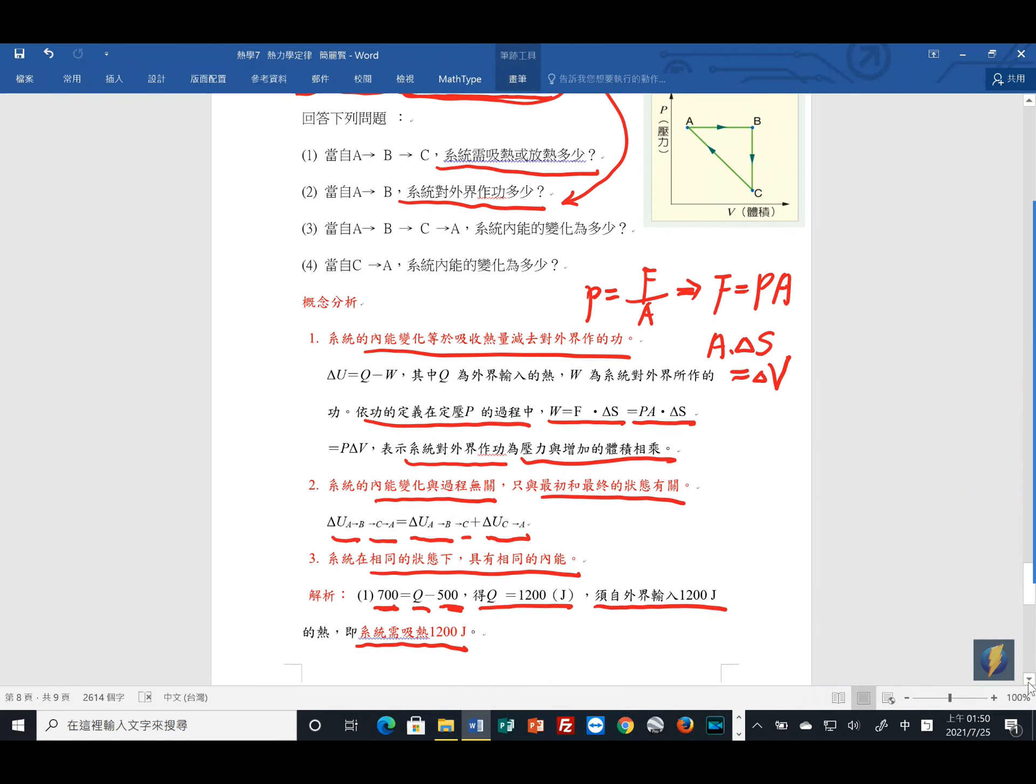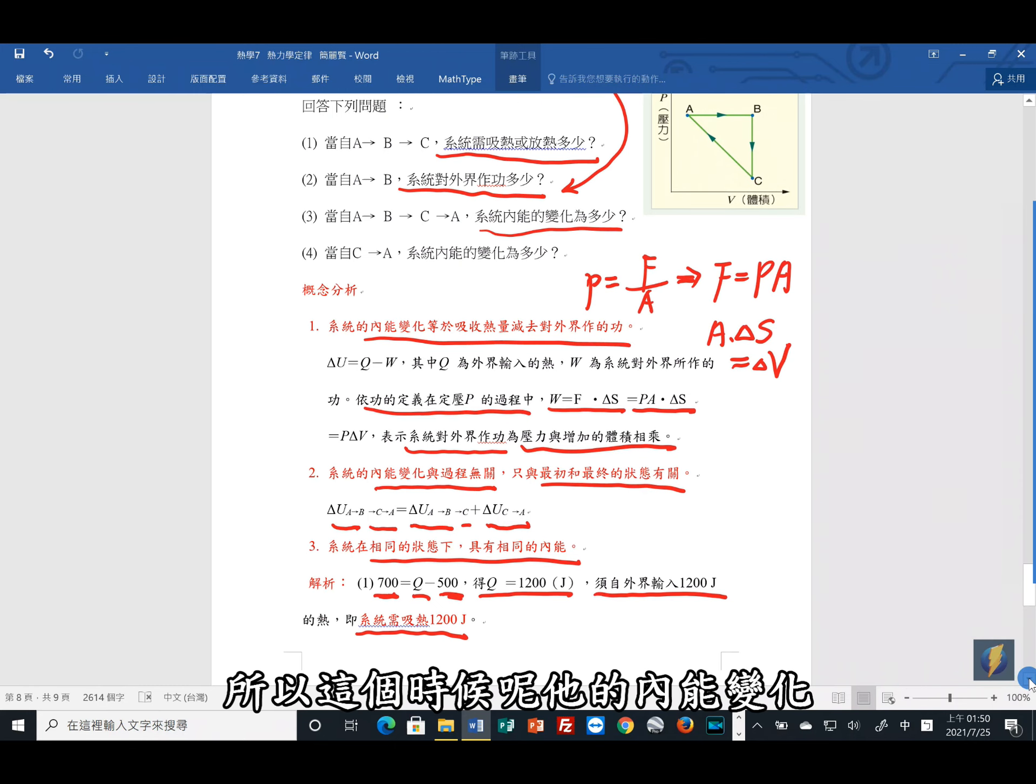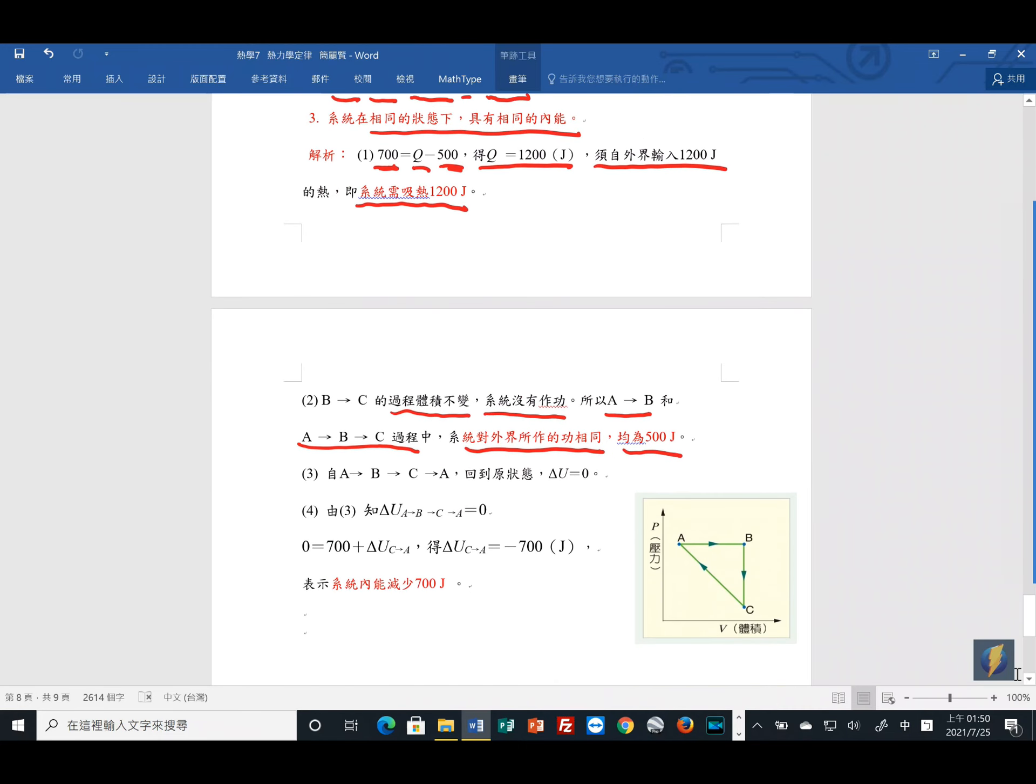再来第三个问题,他要问你A到B到C到A,A到B、B到C、又回到C到A,那问你系统内能的变化是多少。这个地方你可以发现,它是循环回到A了,就回到A。所以这个时候它的内能变化到底是什么?那很简单,你又回到原来的状态,所以我们的前面说过的,内能的变化是最初跟最末,所以今天你从A又回到A,所以内能变化就是没有。所以第三个问题解决了。